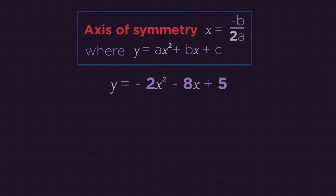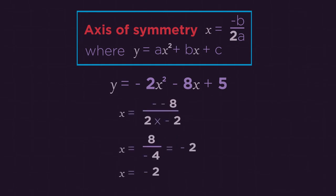Can you find the axis of symmetry for this quadratic? Pause the video, work out the answer and click play when you're ready. Did you get x is negative 2?